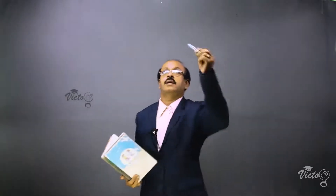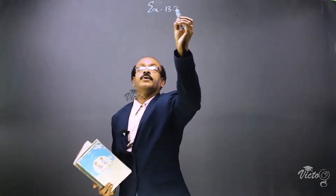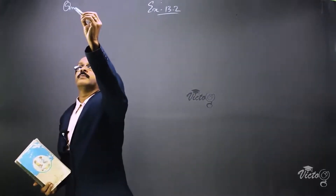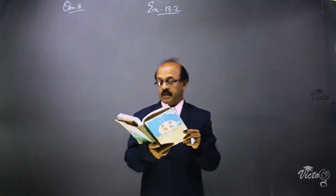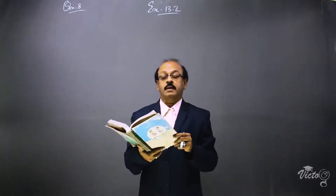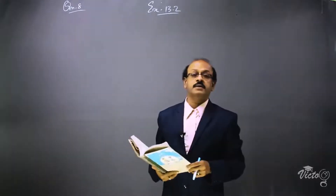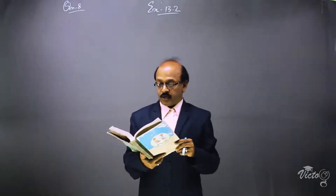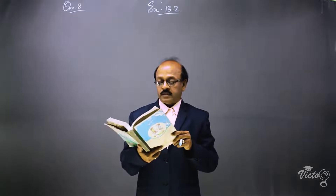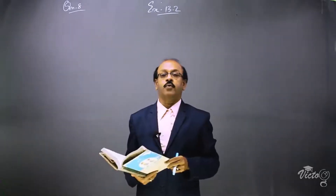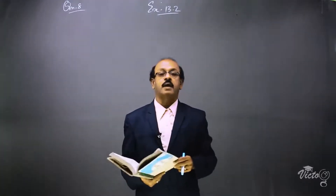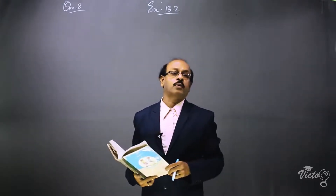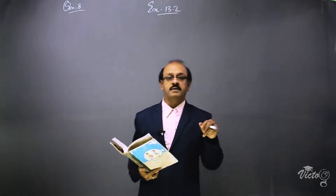Next is the last question of Exercise 13.2 — question number 8. The question is: a spherical glass vessel has a cylindrical neck 8 centimeters long and 2 centimeters in diameter. The diameter of the spherical part is 8.5 centimeters. By measuring the amount of water it holds, a child finds its volume to be 345 centimeter cube. Check whether she is correct, taking the above as the inside measurements and pi equal to 3.14.